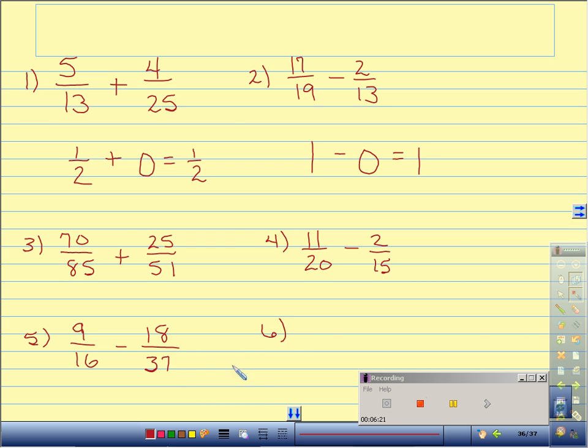Number 5, 9 sixteenths minus 18 thirty-firsts. Number 6, 5 sixteenths plus 7 fifteenths.